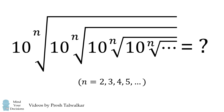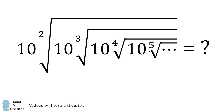Finally, what would happen if instead of one fixed value of the root, we have an increasing value? So we have 10 times the square root, times 10 times the cube root, times 10 times the 4th root, times 10 times the 5th root, and so on, repeated infinitely many times.